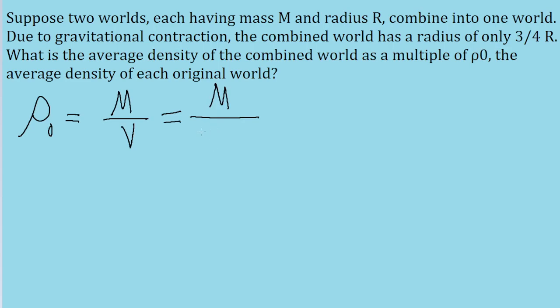This is going to be equal to M divided by the volume of the world, and we're assuming it's spherical, so we're going to apply the formula for the volume of a sphere, 4/3 π multiplied by R³. And then we can write this more neatly by putting the 3 into the numerator. So 3M divided by 4π R³.